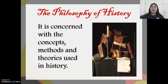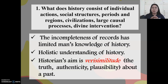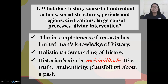What is the philosophy of history? It is concerned with the concepts, methods, and theories used in studying history. The first question given: what does history consist of — individual actions, social structures, periods and regions, civilizations, large causal processes, as well as divine intervention? Basically, the incompleteness of records limits man's knowledge of history. Historians discover, research, and inquire questions about a specific event and conclude based from limited sources of knowledge or evidence. In order to have a holistic understanding of history, they should have individual actions and complete sources of evidence. Historians try to understand civilizations, social structures, periods, as well as divine intervention in order to produce or conclude a certain historical event.